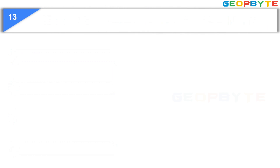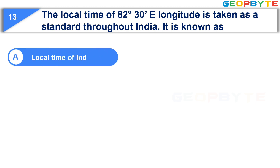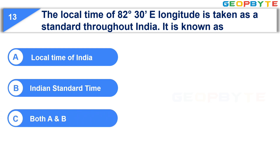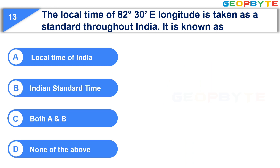Now let us see the thirteenth question. The local time of 82 degrees 30 minutes east longitude is taken as a standard throughout India. It is known as — Option A: local time of India. Option B: Indian Standard Time. Option C: Both A and B. Option D: None of the above. Your time starts now. Your time is up and the correct answer is Option B: Indian Standard Time.